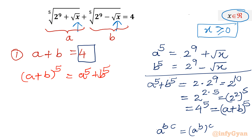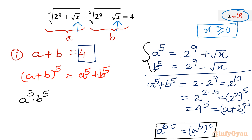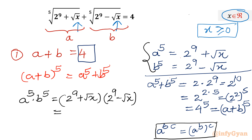Before proceeding, let us also calculate the product a⁵ times b⁵. Taking the product of both fifth-power equations gives (2⁹ + √x)(2⁹ − √x), which is a difference of squares. So (ab)⁵ equals 2 to the power 18 minus x.